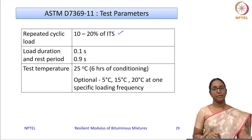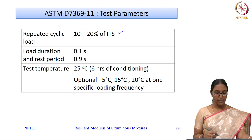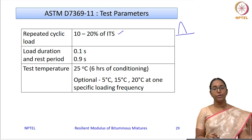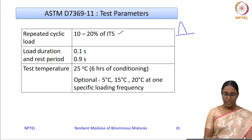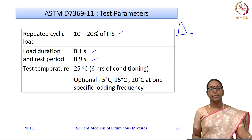This is different from the previous version, where the load range was 10 to 50 percent of ITS. Now, the P max to be applied must be 10 to 20 percent of the indirect tensile strength value. The load duration is 0.1 seconds loading and 0.9 seconds rest period.